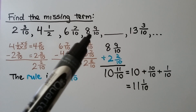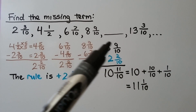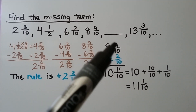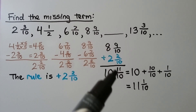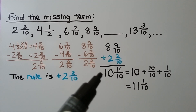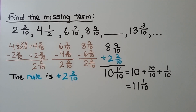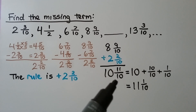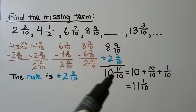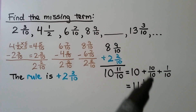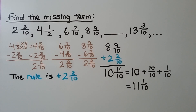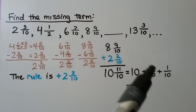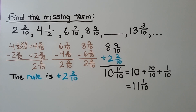We take eight and nine tenths and add two and two tenths. Nine plus two is eleven, giving eleven tenths; eight plus two gives ten. We have ten and eleven tenths, but eleven tenths is an improper fraction. Ten and eleven tenths equals ten plus ten tenths as one whole plus one tenth — we rewrite it as eleven and one tenth. So the missing term is eleven and one tenth.